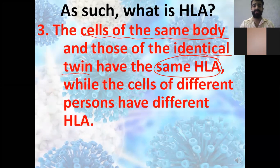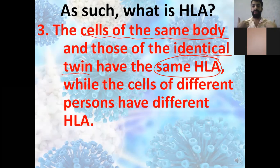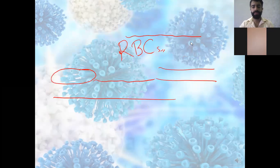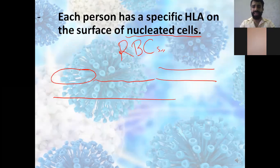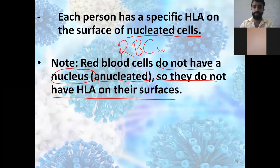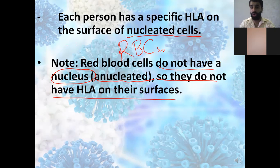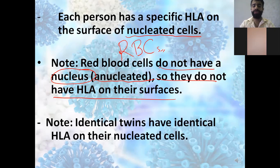The cells of the same body and those of identical twins have the same HLA, while cells of different persons have different HLA. Each person has a specific HLA on the surface of nucleated cells. Red blood cells do not have a nucleus, which means they don't have HLA on their surfaces. Identical twins have identical HLA on their nucleated cells.